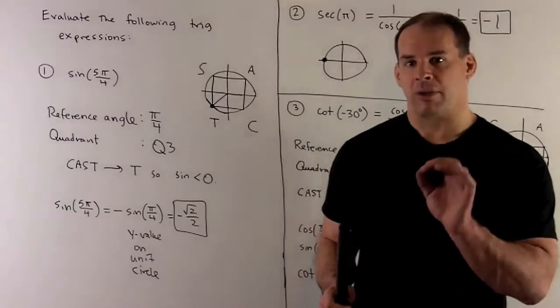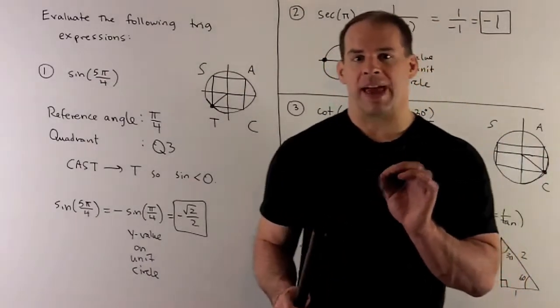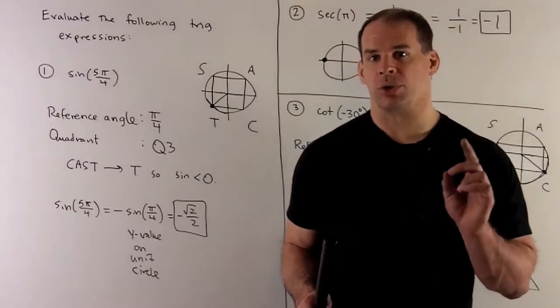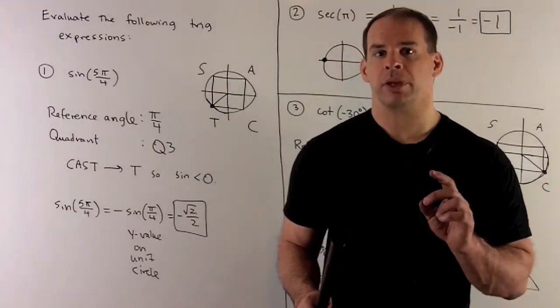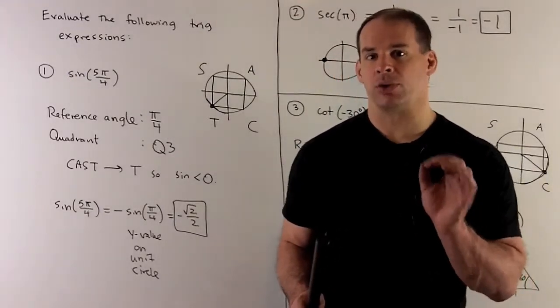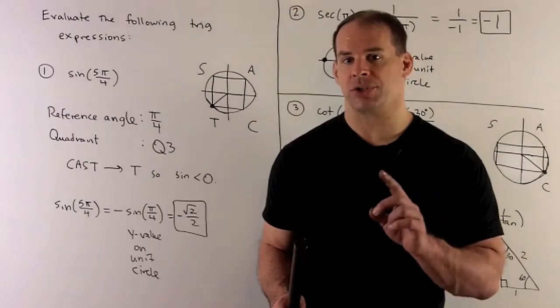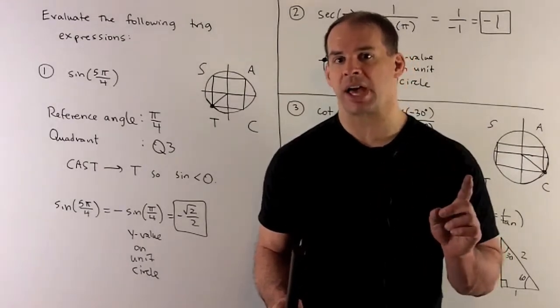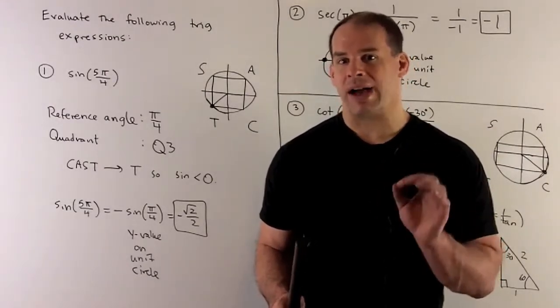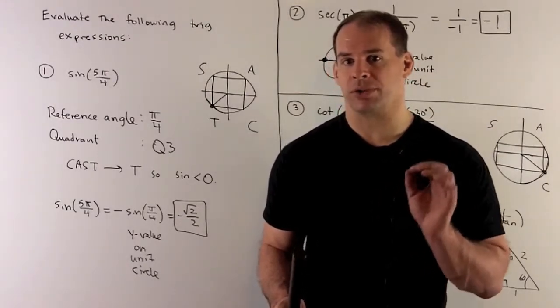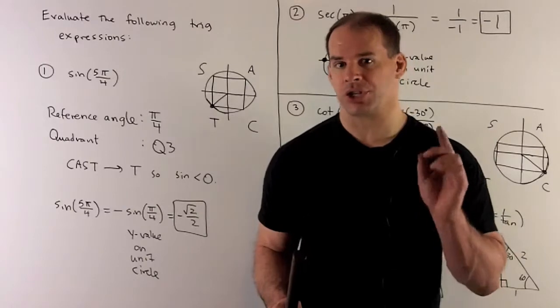Now, π over 4 — we know that has cosine and sine of √2 over 2. The x value in the unit circle is √2 over 2, which is our cosine. The y value in the unit circle is √2 over 2, which is our sine.